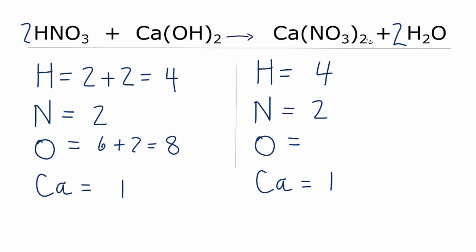And then for oxygens, I have the two times the three. That's the six, plus the two times the one. That's two, and that gives me a total of eight oxygens. So the oxygens are also balanced, and we didn't change the calciums.